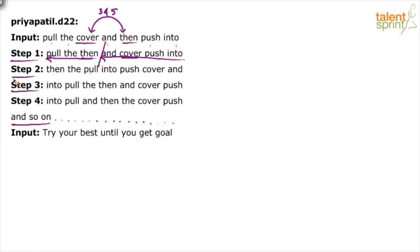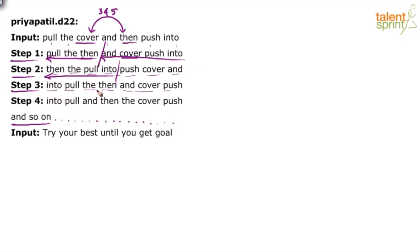Look at step 3 now. Into has come here from this position, pull has come here, then we have the, then we have then. So this sequence has been reversed: into, pull, the, then. For the remaining words: and has come here, cover as it is, push has come here. So in step 3 we have taken the previous step into two parts again — this time first 4 and last 3. And again they have been reversed: then the pull into becomes into, pull, the, then. And push, cover, and becomes and, cover, push.